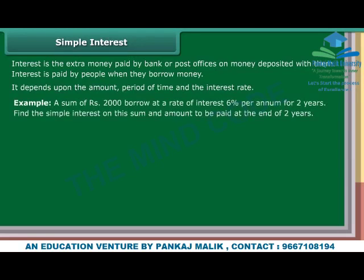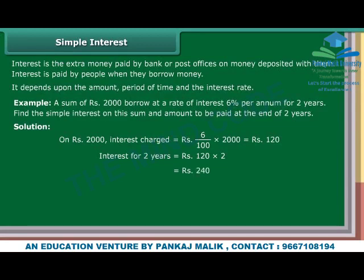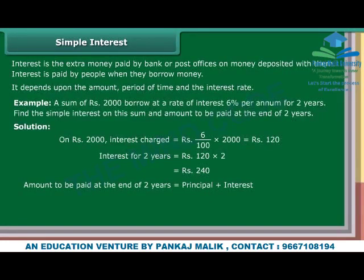Example: A sum of Rs. 2,000 is borrowed at a rate of interest of 6% per annum for 2 years. Find the simple interest on this sum and the amount to be paid at the end of 2 years. Solution: On Rs. 2,000, interest charged equals 6 upon 100 into 2,000, which equals Rs. 120. Interest for 2 years equals Rs. 120 into 2, which equals Rs. 240. Amount to be paid equals principal plus interest, which equals Rs. 2,000 plus Rs. 240, which equals Rs. 2,240.